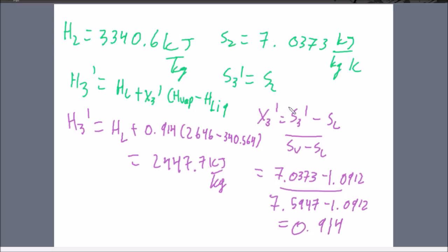And so, if you take the numbers that we have found, 7.0373 minus 1.0912, we found that on the page beforehand, that was the saturated liquid, divided by the entropy of the vapor minus the entropy of the liquid. And if you do the math, you're going to get a steam quality of 0.914. So, that's some pretty good high quality steam right there.